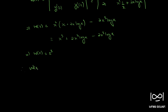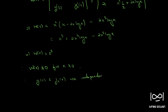The Wronskian is not equal to zero for x not equal to zero. Therefore, y1(x) and y2(x) are linearly independent solutions.